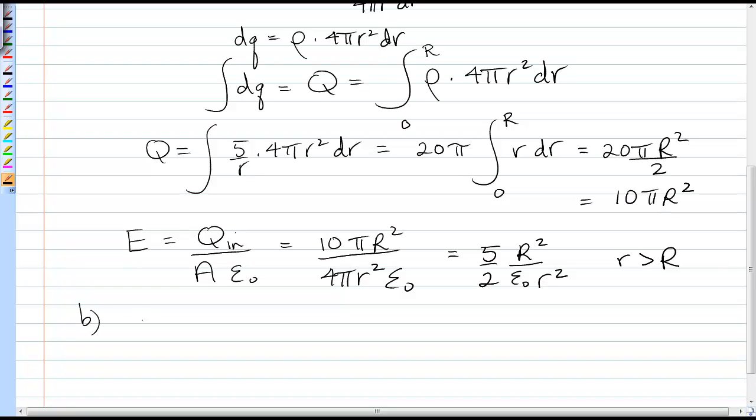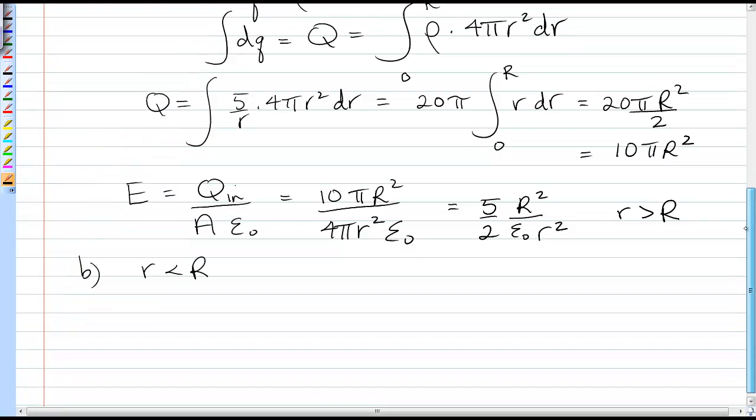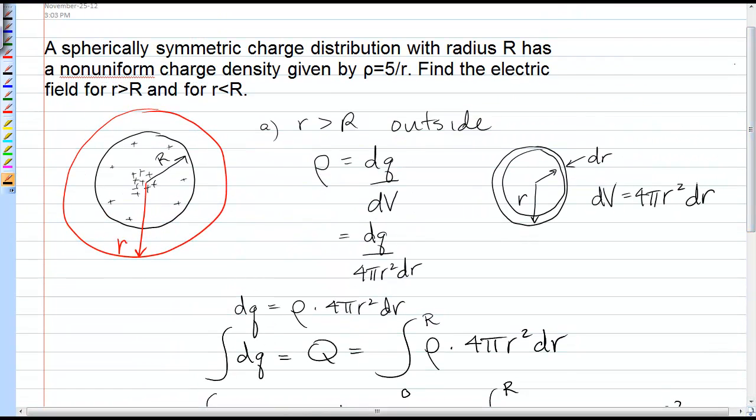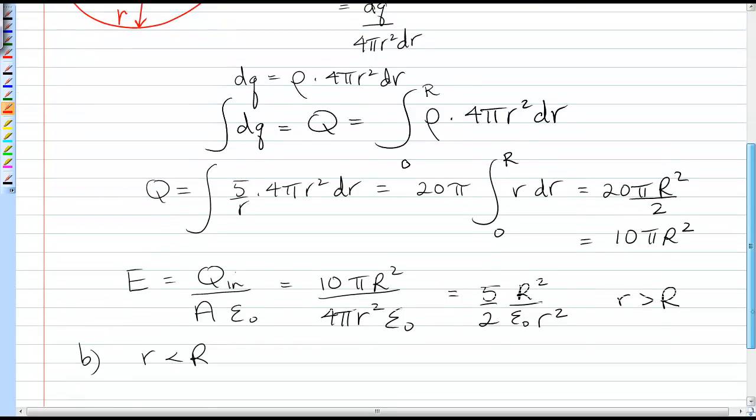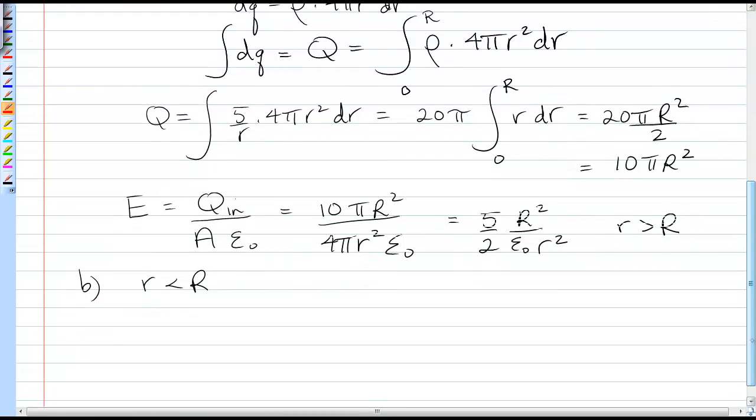Part b, we're going inside the sphere. Now we draw our Gaussian surface inside the sphere. We let the radius of the Gaussian surface be small r. Now we need to find q_in, and q_in is just the part inside this Gaussian surface. It's less than the total charge. We go back to our integral, and it's exactly the same integral.